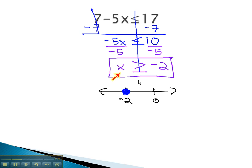The inequality also opens to the x, showing that x is greater than the negative 2, meaning we need to shade the values that are larger than the negative 2. We now have a picture of the solutions to this inequality.